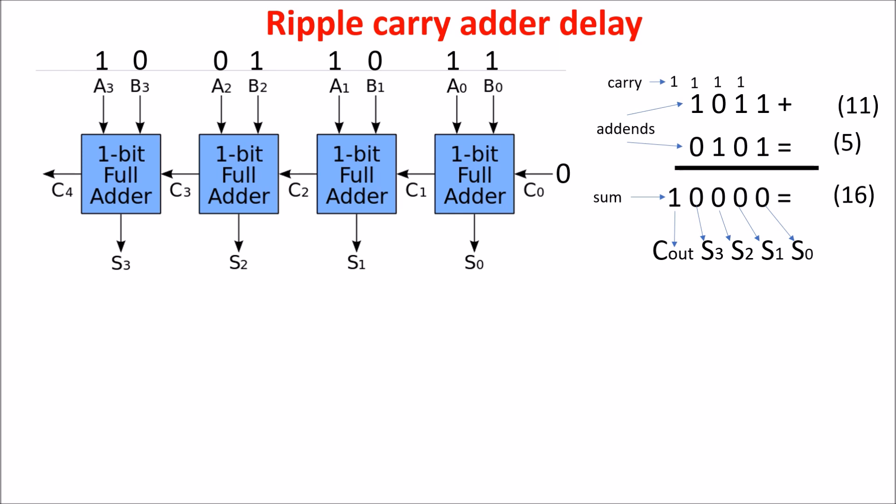And after some time, which we call T sum, we have on the output a result. But this first result is wrong, because we have to wait more time for the carry to propagate and download the generation of the right result.